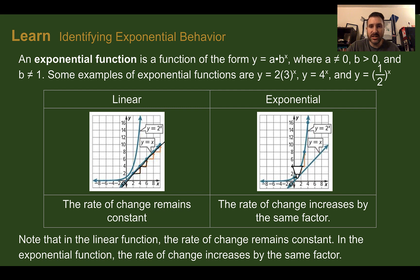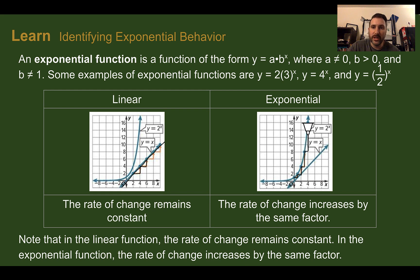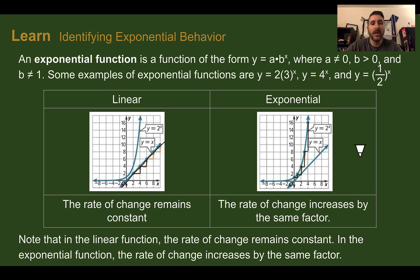Exponential functions, on the other hand, start off with a little bit, then it's about twice as far for the same amount over, and then twice as far again, and twice as far again. So exponential is multiplying by the same factor — you're going to see it doubling, tripling, or maybe multiplying by 1.5, or in the opposite direction by one-half or one-fourth. Linear functions add the same amount each time, whereas exponential functions multiply by the same amount each time.